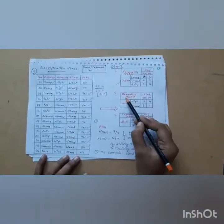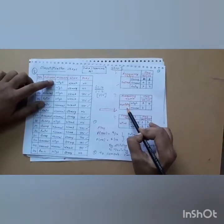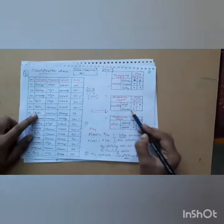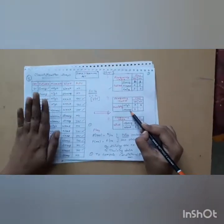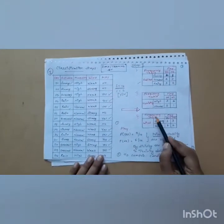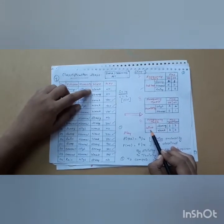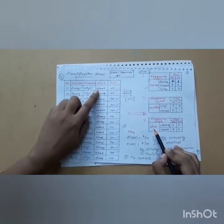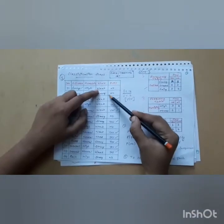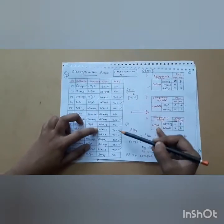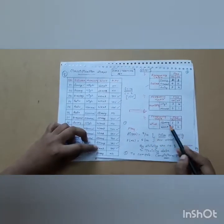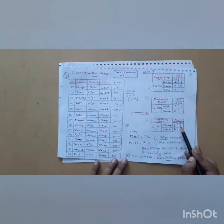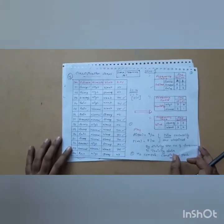Next, build a frequency table for the humidity attribute. The instances are high or normal, and you compute how many possibilities exist for each in the training dataset. Likewise, for the wind attribute the two possibilities are weak or strong. For weak wind: yes is 6, no is 2. For strong wind: yes is 3 and no is 3.